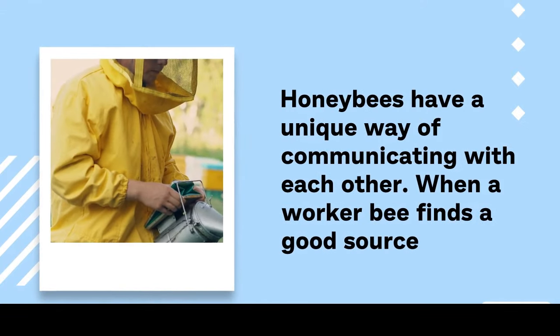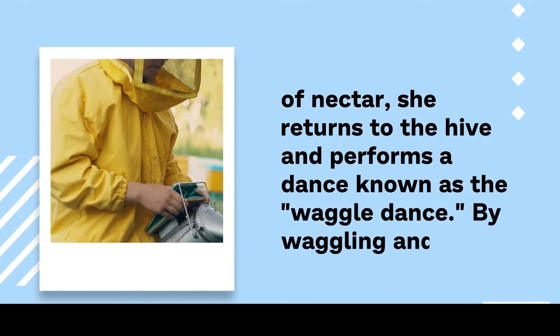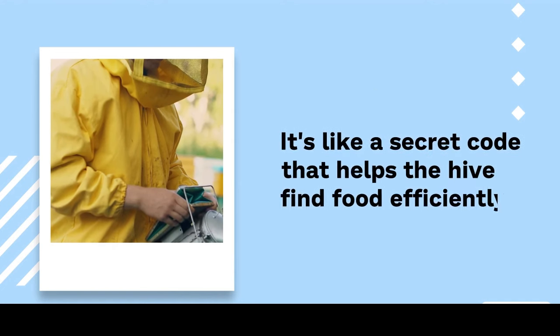Honeybees have a unique way of communicating with each other. When a worker bee finds a good source of nectar, she returns to the hive and performs a dance known as the waggle dance. By waggling and circling in a specific way, she tells her fellow bees the direction and distance to the food source. It's like a secret code that helps the hive find food efficiently.